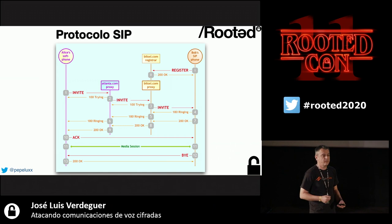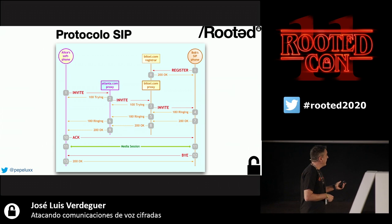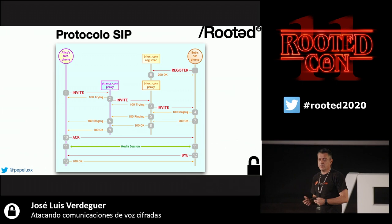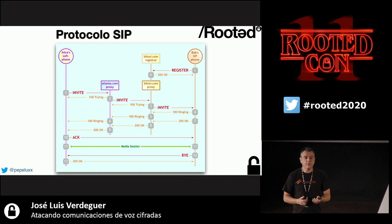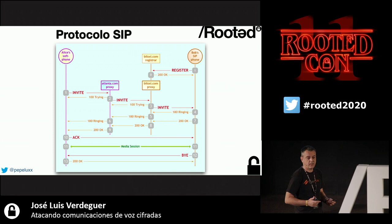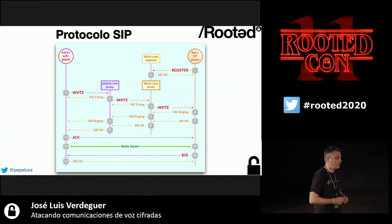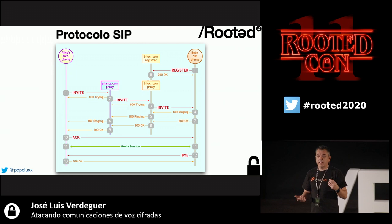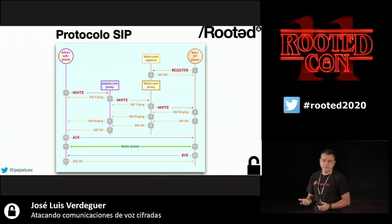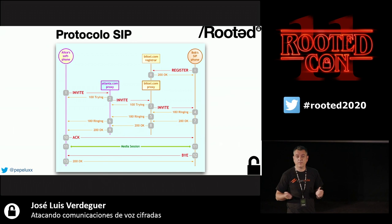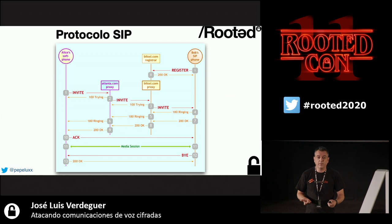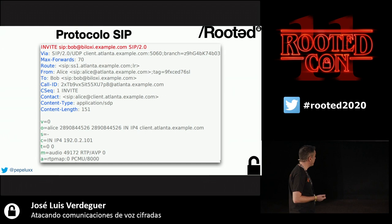If we analyze a SIP dialogue, we have Alice calling Bob. Bob must have registered previously to receive the call. Alice sends an INVITE message through her server, which forwards it to Bob's server. Bob's phone answers with a provisional 1xx code, Alice hears ringing, then a 200 OK is sent and the media session begins.